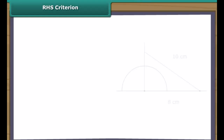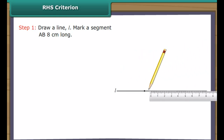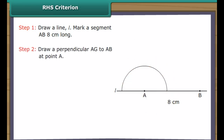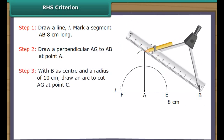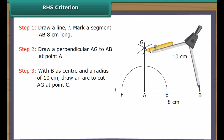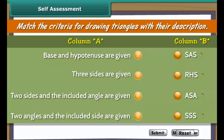RHS criterion. Let us now draw a triangle one of whose angles measures 90 degrees, and the base and hypotenuse are 8 cm and 10 cm respectively. Draw a line L and mark a segment AB 8 cm long. Draw a perpendicular AG to AB at point A. With B as center and a radius of 10 cm, draw an arc to cut AG at point C. Join point C to point B. The right-angled triangle with a base and hypotenuse measuring 8 cm and 10 cm respectively is formed.